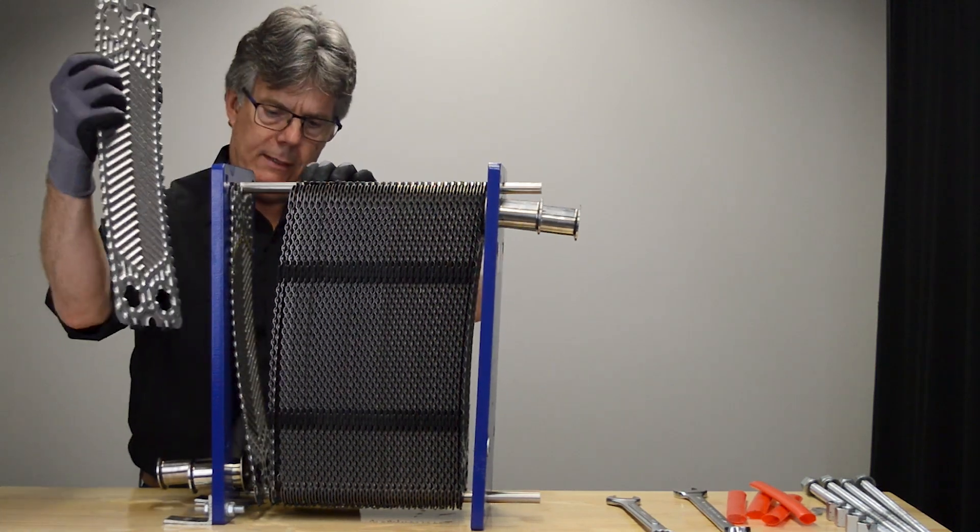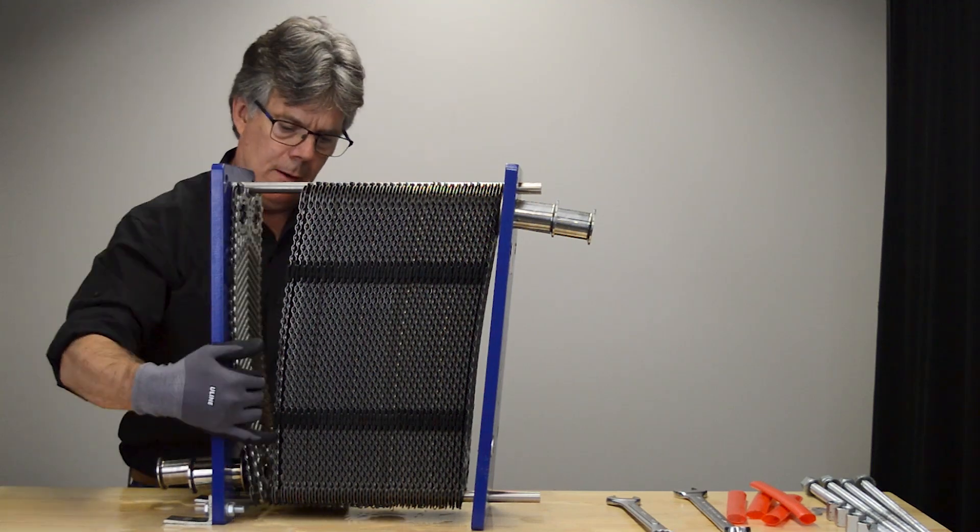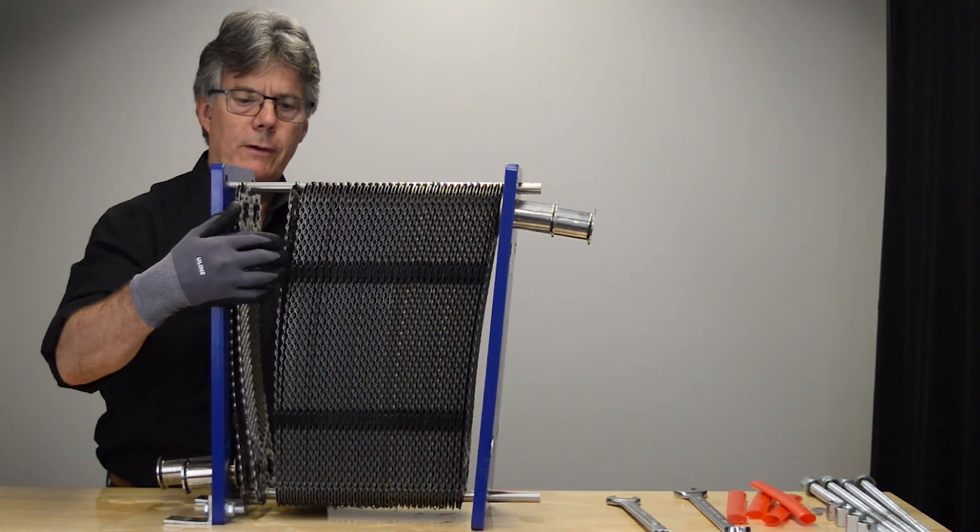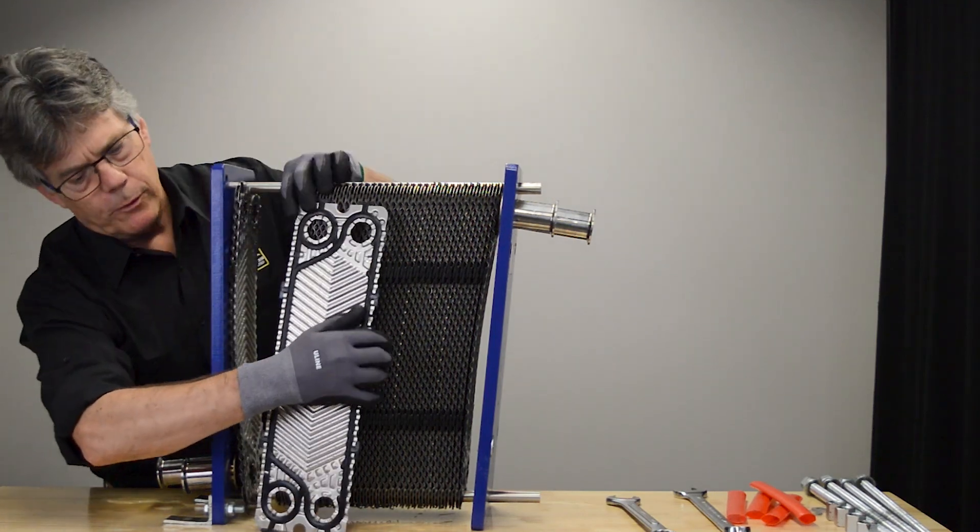I'm being very careful not to mix these up, because we have a flow plate and an alternating flow plate. This will be the other side. See this one, the flow is going this way.